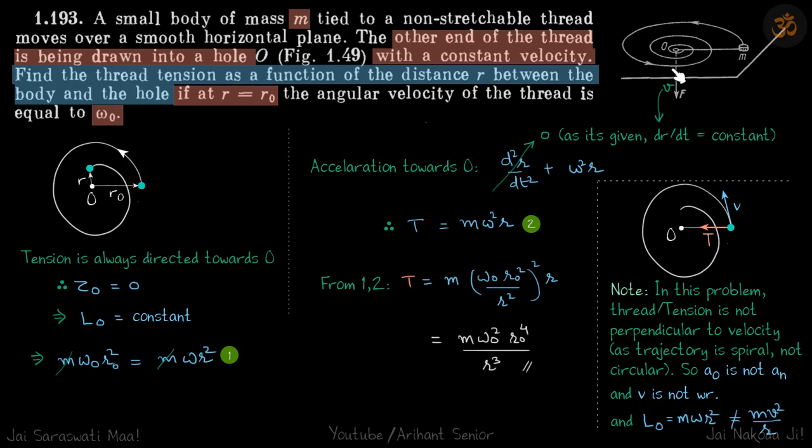Now it's being pulled with a constant velocity v which means dr by dt is constant, which means d2r by dt square is zero. So acceleration towards O is given by tension and its value is m times omega square r.